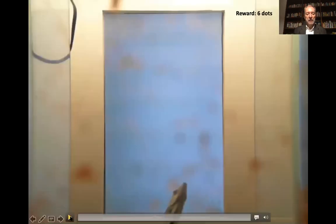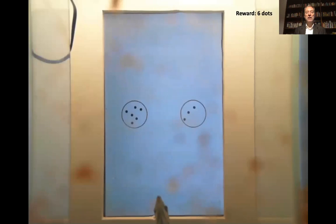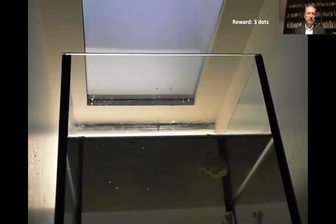I'll show you an example of the performance of an archerfish. They are trained in this case to spit on the six dots. I'll show you another example from a different vantage point. In this case the reward is the second, there is the three dots.